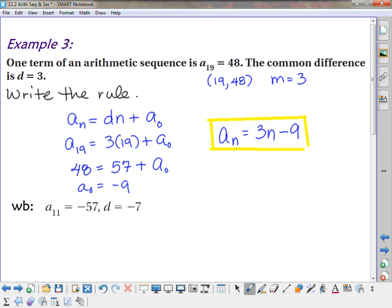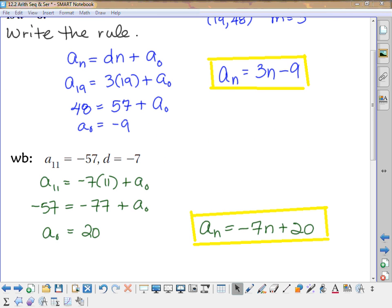So, here's one for you guys to do on your own. A sub 11 is negative 57, and the common difference is negative 7. All right, so when you plugged in 11 for your n, and then a sub 11 was negative 57, you should have gotten the a sub 0 was 20. And so, your rule would have been a sub n equals negative 7n plus 20. Questions?